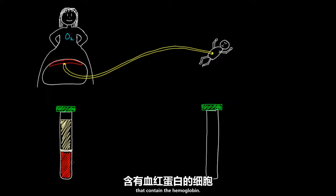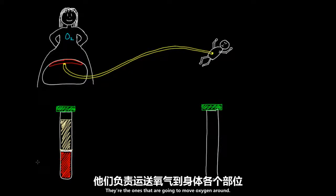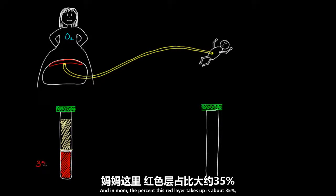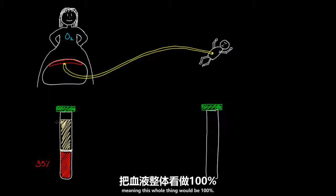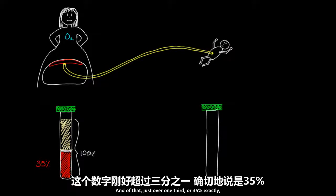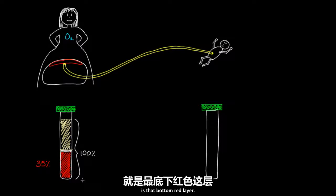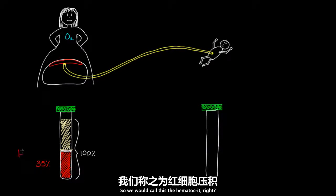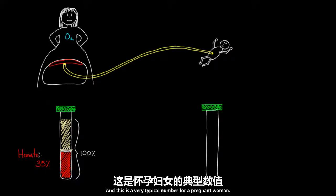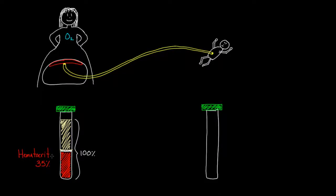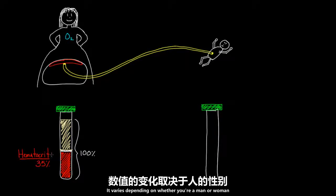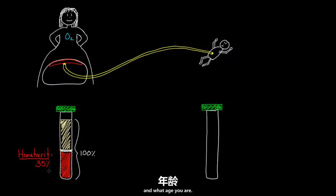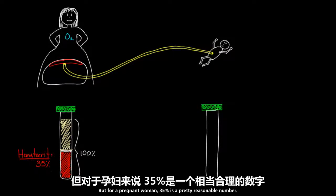Red blood cells contain hemoglobin — they're the ones that move oxygen around. In mom, that red blood cell layer takes up about 35% of the total blood volume. We call this the hematocrit. So mom's hematocrit is about 35%, which is a very typical number for a pregnant woman. It varies depending on sex and age, but 35% is a pretty reasonable number for a pregnant woman.